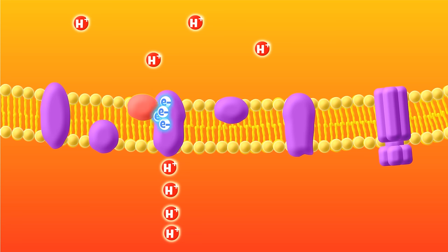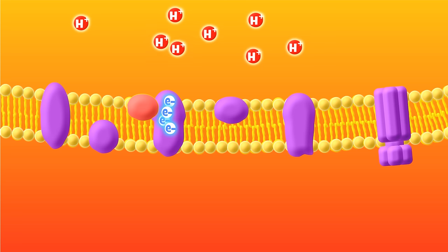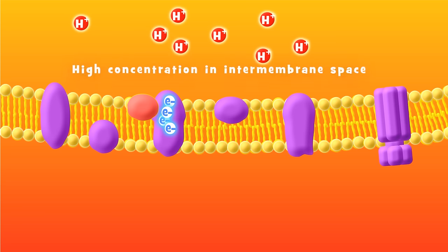At this next protein complex, the electron energy is used once again to transport hydrogen ions across the membrane into the intermembrane space. Notice that we are building up a high concentration of hydrogen ions in the intermembrane space. This will be very important soon.